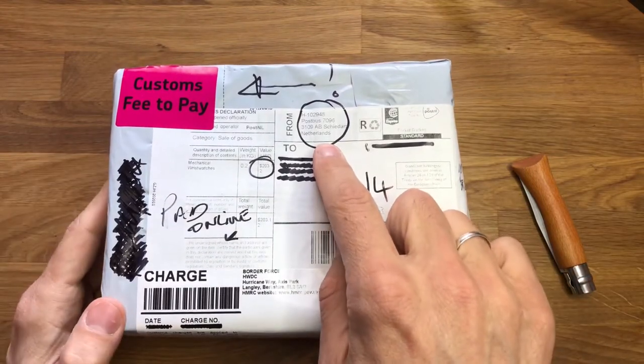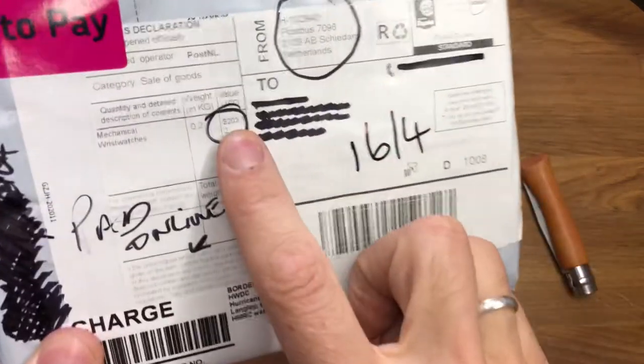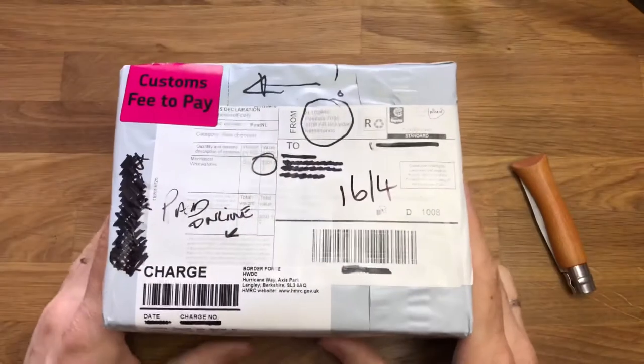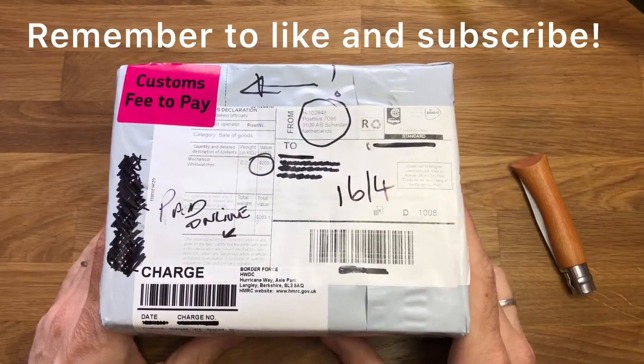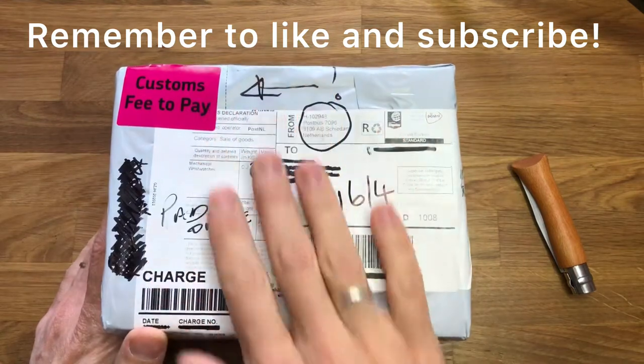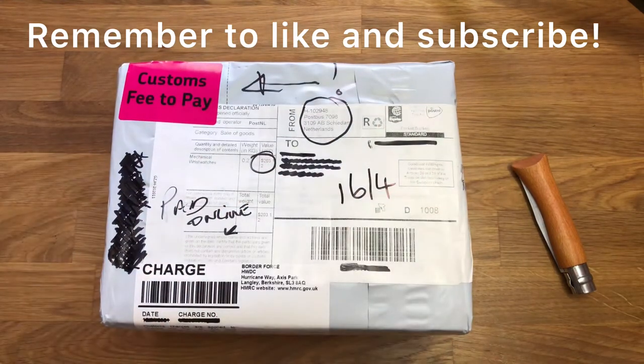You can see it was shipped from the Netherlands and it's been valued at 203 dollars, which means it was stopped by customs and they've added their fair share onto it. So this watch has now cost me 37 pounds more than it should have done.